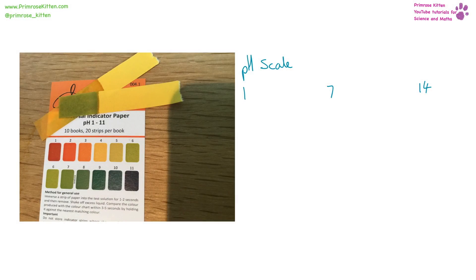On the pH scale, things that have a pH of 1 are acidic, pH 7 is neutral, and 14 is alkaline. The ions responsible for acidity are hydrogen ions, the ions responsible for alkalinity are hydroxide ions.